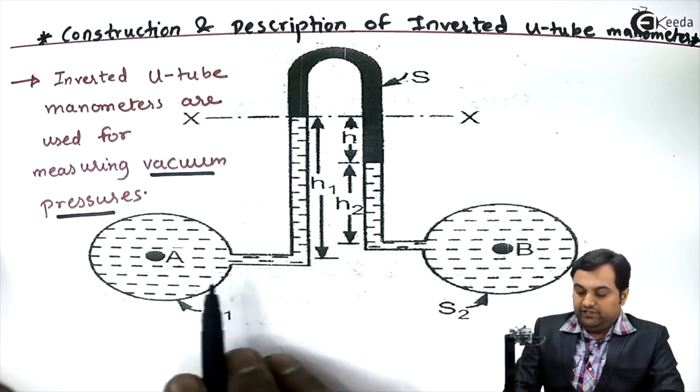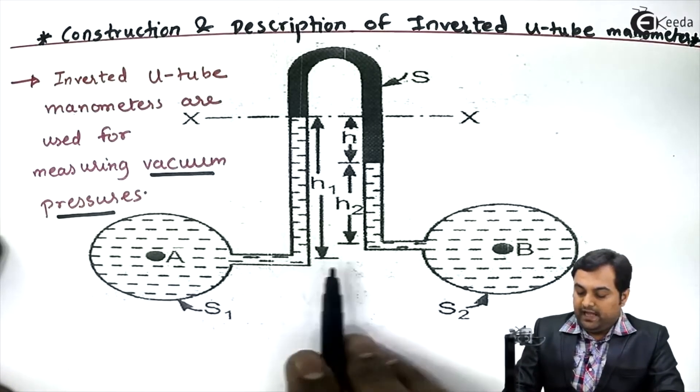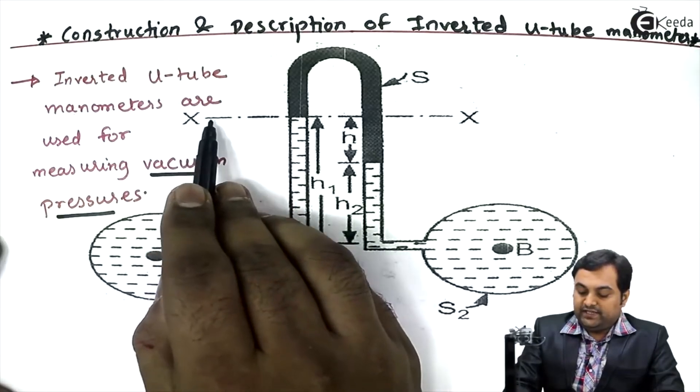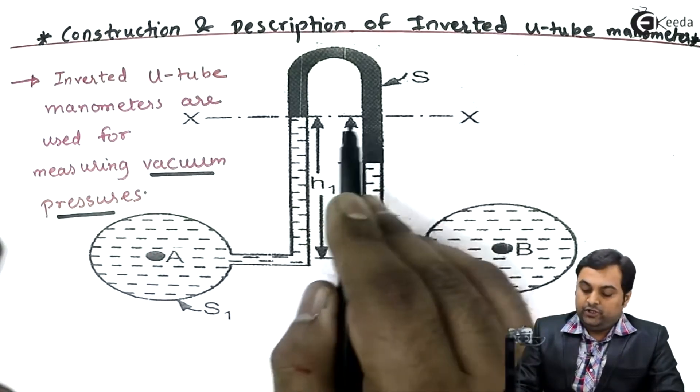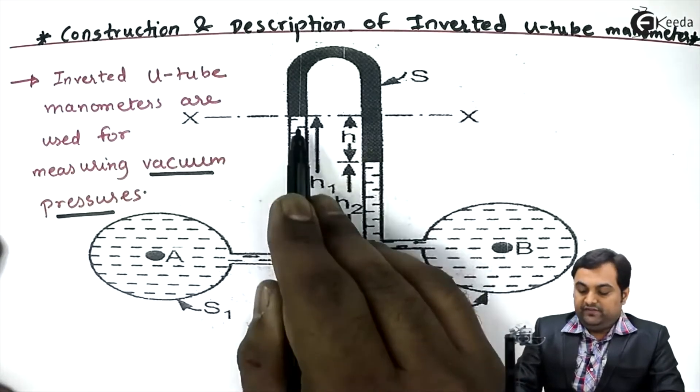Now for the calculation of difference in pressure, we need to balance the left limb and the right limb. How to balance that? As we can see here, there is section X-X. Below this we are having the left limb and the right limb.